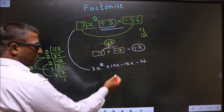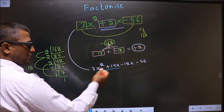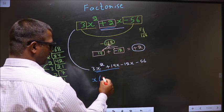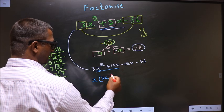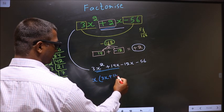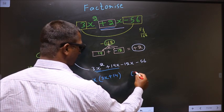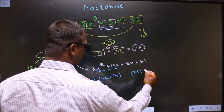Next, from the first two terms, we can factor out x, giving us x(3x + 14). From the last two terms, we should also get the same binomial, (3x + 14).